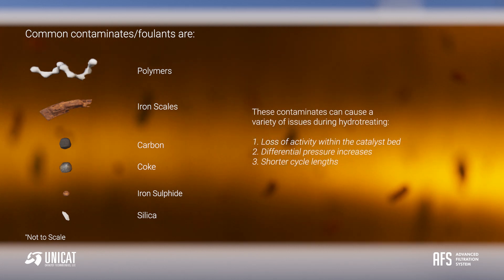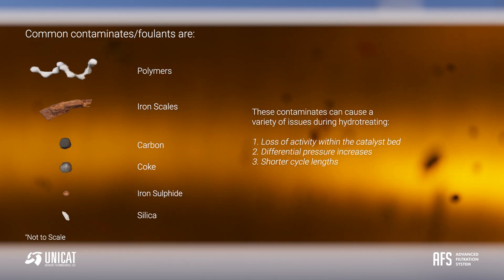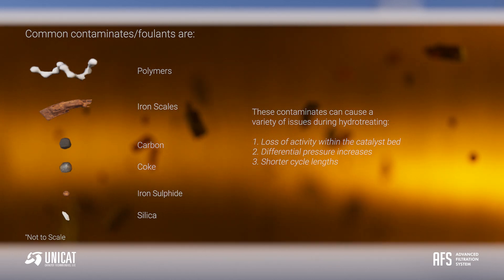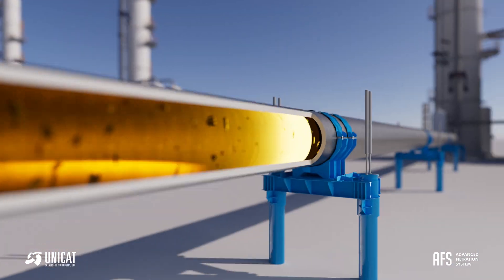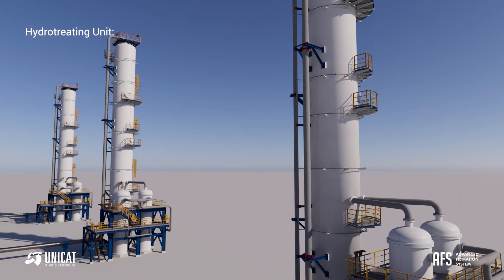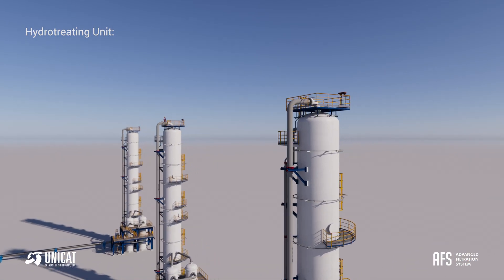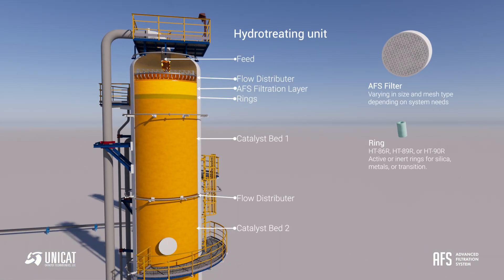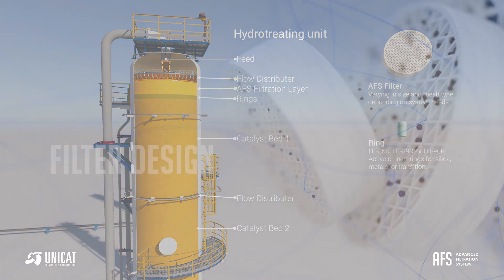These contaminants can cause a variety of issues during hydro-treating: loss of activity within the catalyst bed, differential pressure increases, and shorter cycle lengths. The hydro-treating unit is made up of several layers including the feed, flow distributor, and filtration, stopping contaminants from damaging the expensive catalyst bed and rings.